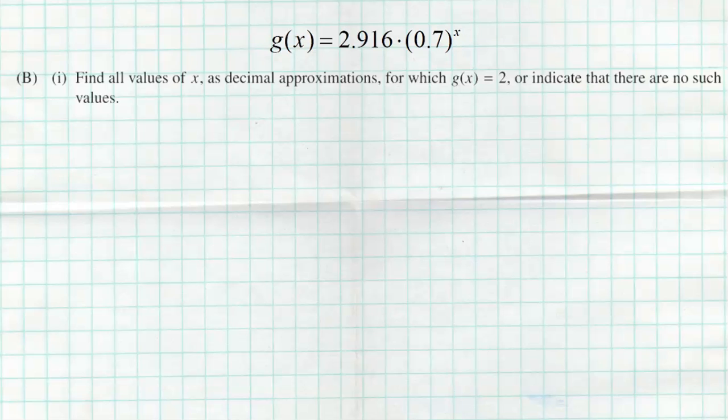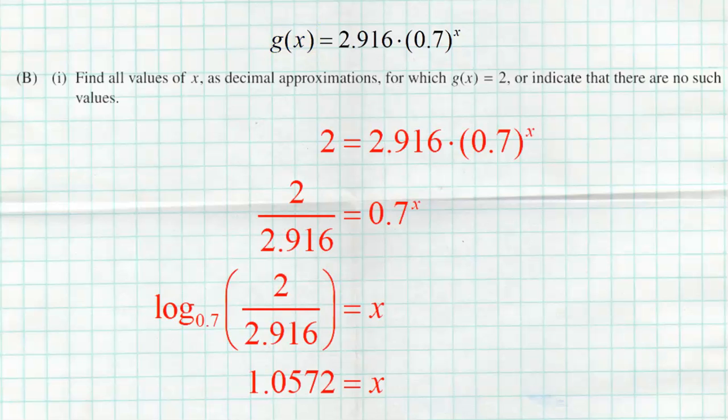Moving on to part B here. This part deals with g of x. The first part says find all values of x as decimal approximations for which g of x equals 2 or indicate that there are no such values. The first thing we're going to do is we're going to turn that g of x into a 2, and then we'll begin our solving process.